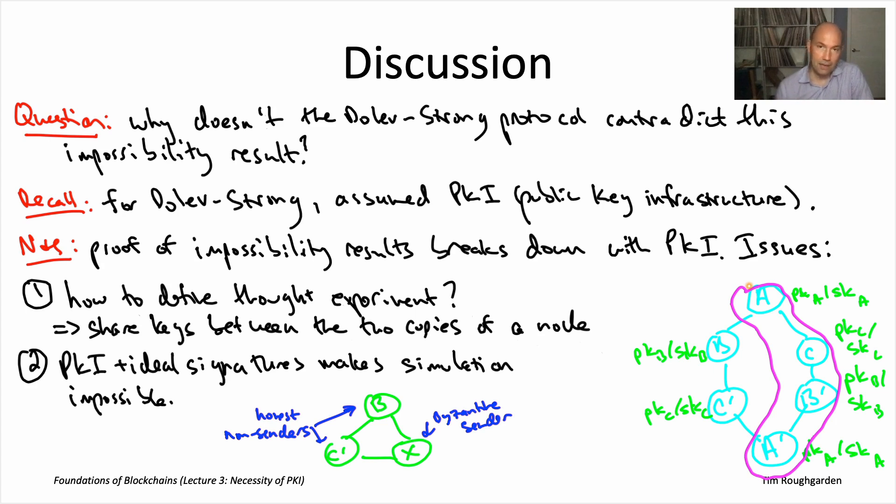So this is the chain between A and A prime. So now we see why we might have a problem, right? So simulation means that this single Byzantine node capital X is responsible for recreating all of the behavior of these four honest nodes in the thought experiment: A, C, B prime, and A prime. Including possibly signing messages with the appropriate private key.